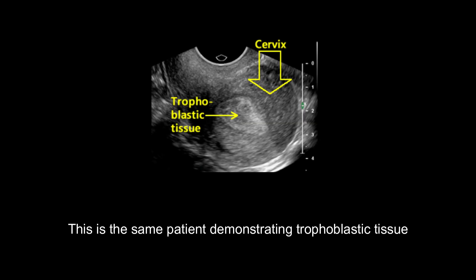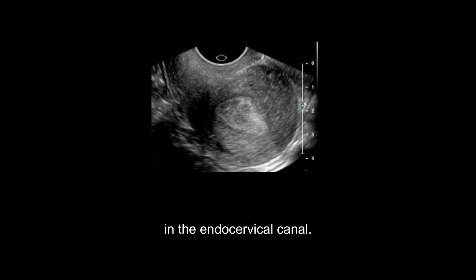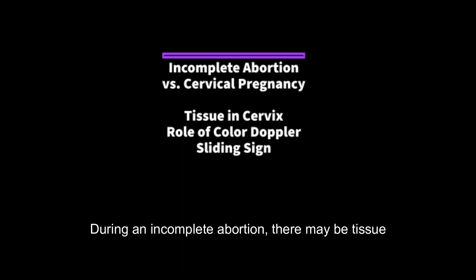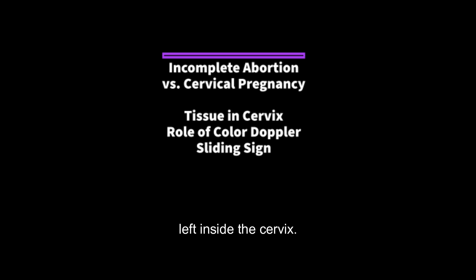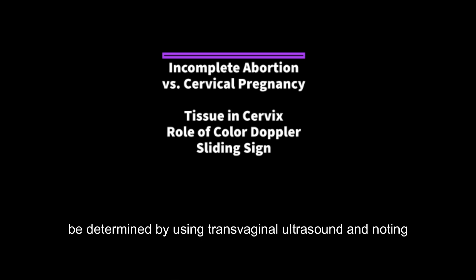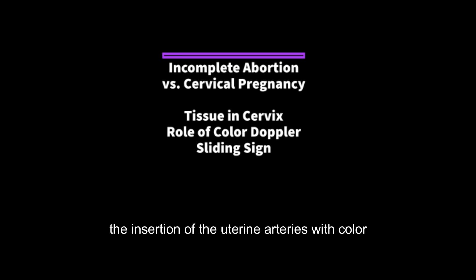This is the same patient demonstrating trophoblastic tissue in the endocervical canal. During an incomplete abortion, there may be tissue left inside the cervix. The level of the internal cervical opening can be determined by using transvaginal ultrasound and noting the insertion of the uterine arteries with color Doppler, which will indicate the level of the ICO.